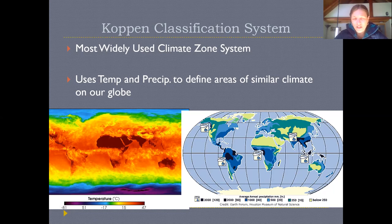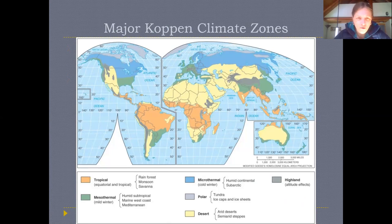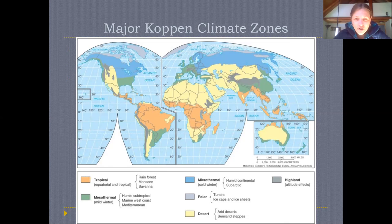The Köppen system uses not only the amount of precipitation but also seasonality of precipitation, combining ranges of temperature and precipitation to break up the world into areas that share similar climates. Here is a simplified Köppen climate map showing six different zones: the tropical zone along the equator in orange; the mesothermal zone — a moderate climate zone — in green, which is where we live; and the microthermal zone in blue, a cold, high-latitude zone.